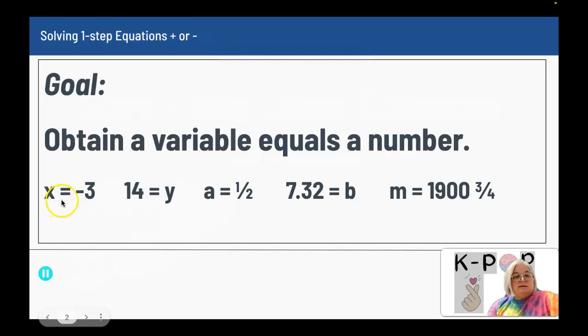So you want to get X equals negative 3, or 14 equals Y. Notice the variable comes first in the first expression, X equals negative 3, and it comes after in the second one.